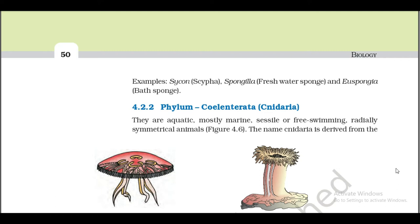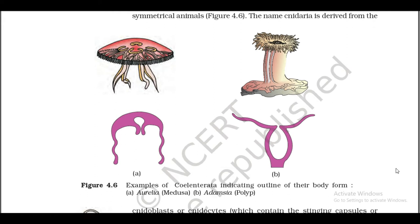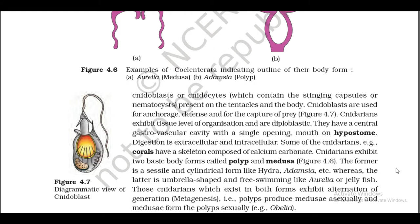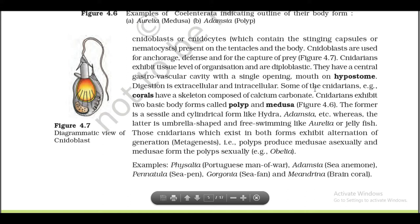4.2.2 Phylum Coelenterata (Cnidaria). They are aquatic, mostly marine, sessile or free-swimming, radially symmetrical animals (Figure 4.6). The name Cnidaria is derived from cnidoblasts or cnidocytes, which contain the stinging capsules or nematocysts present on the tentacles and the body. Cnidoblasts are used for anchorage, defence, and for the capture of prey (Figure 4.7). Cnidarians exhibit tissue level of organization and are diploblastic. They have a central gastrovascular cavity with a single opening, the mouth on hypostome. Digestion is extracellular and intracellular. Some cnidarians, e.g., corals, have a skeleton composed of calcium carbonate.